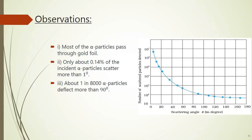A graph of scattering angle on the x-axis and number of scattered particles detected on the y-axis was plotted. It was observed that most of the alpha particles passed through the gold foil. Only about 0.14% of incident alpha particles scattered more than one degree, and about 1 in 8000 alpha particles deflected more than 90 degrees.